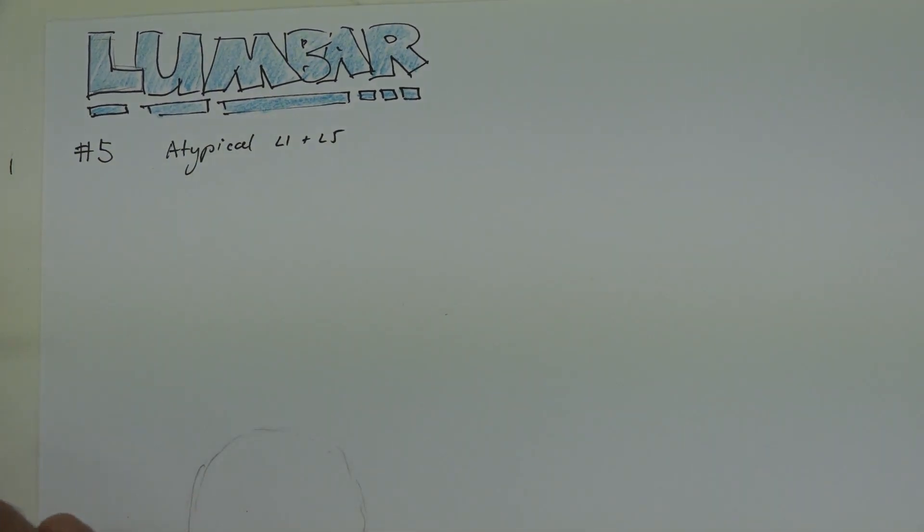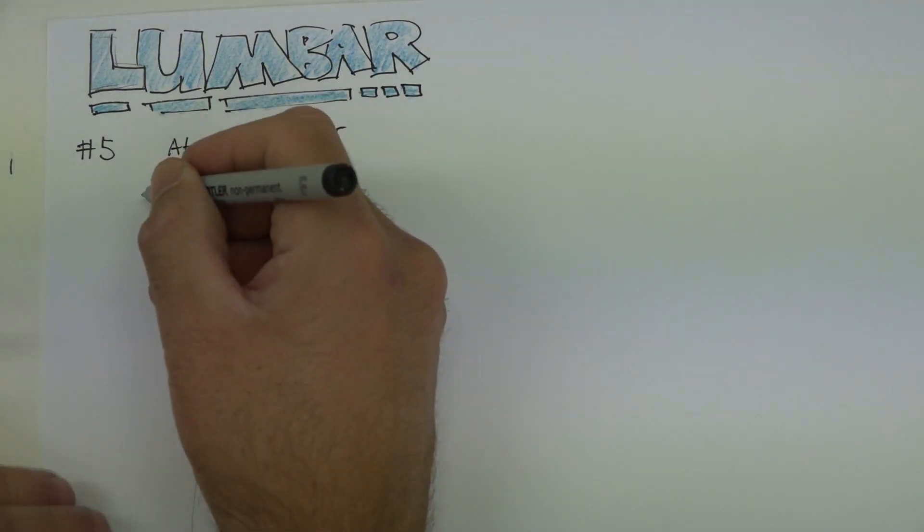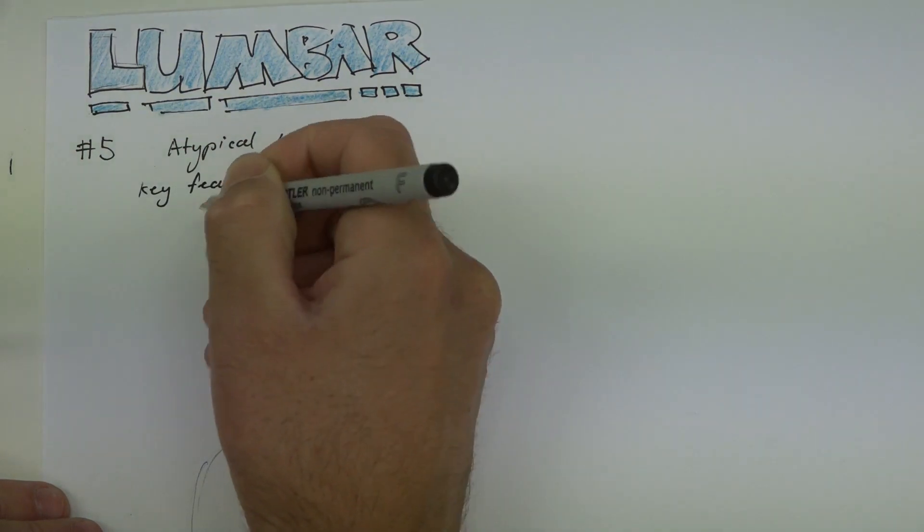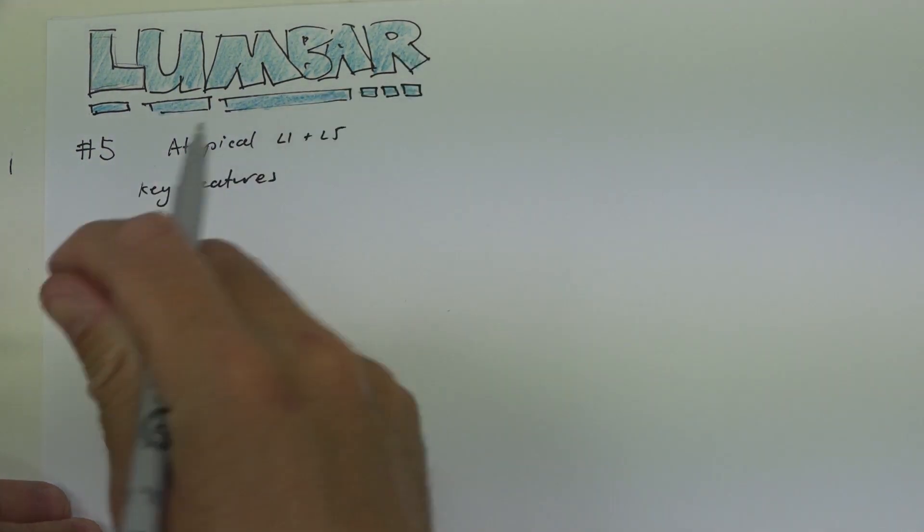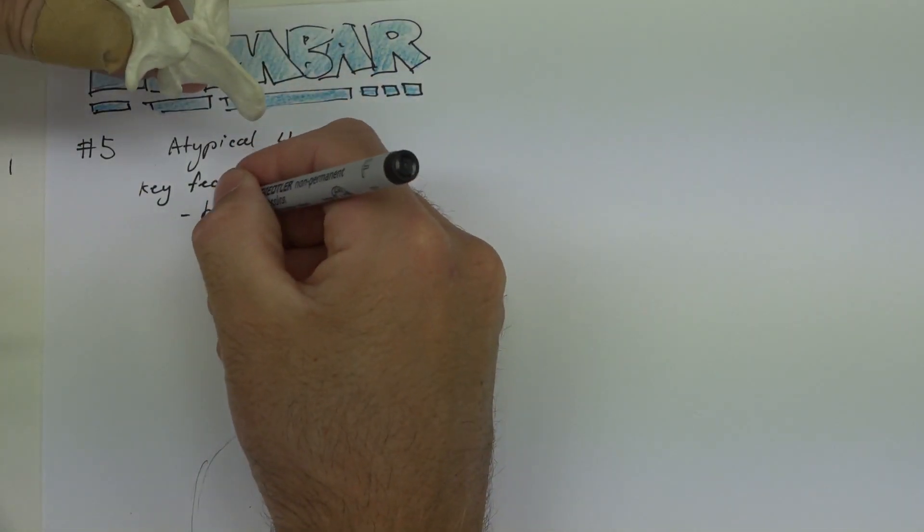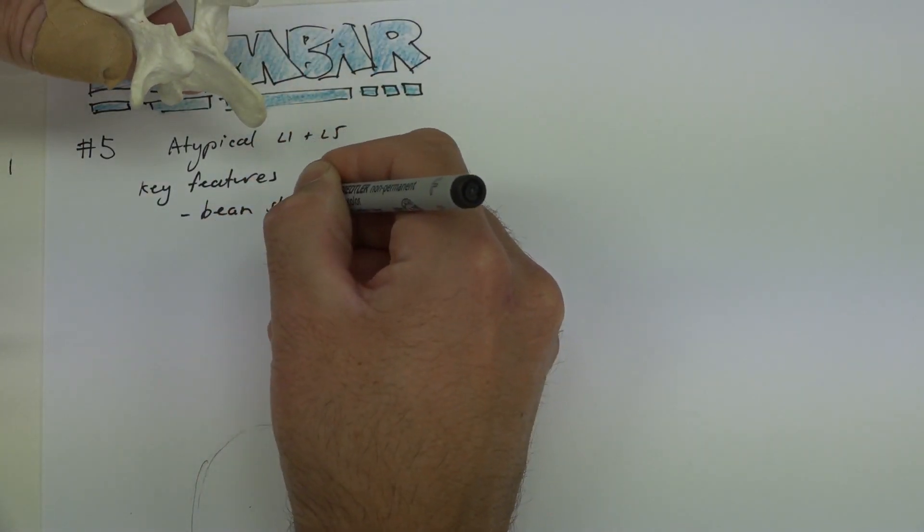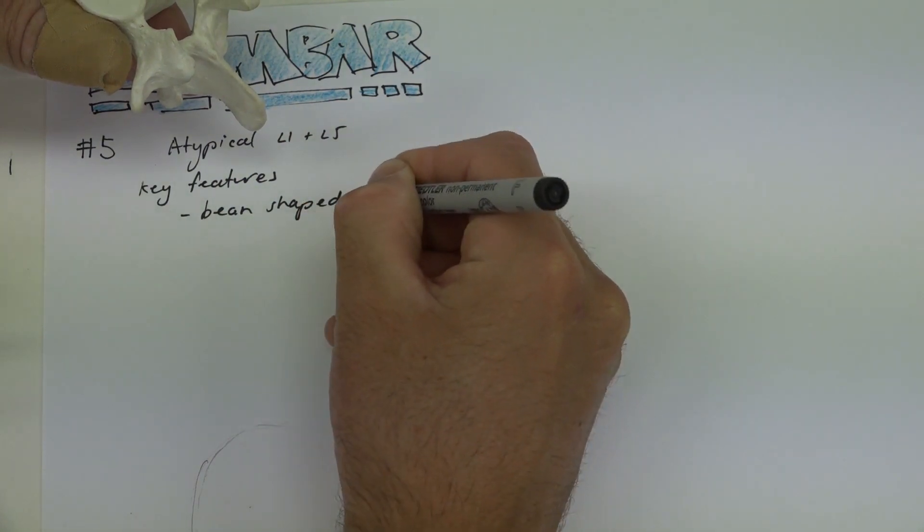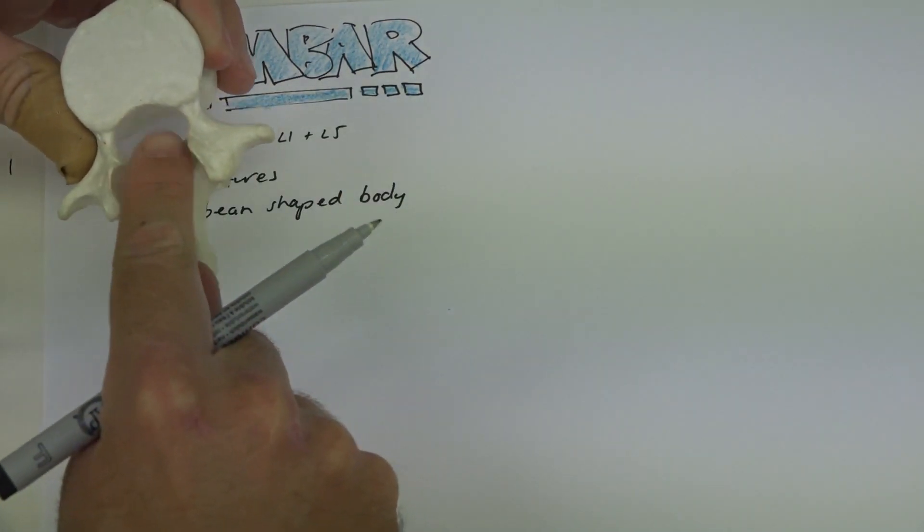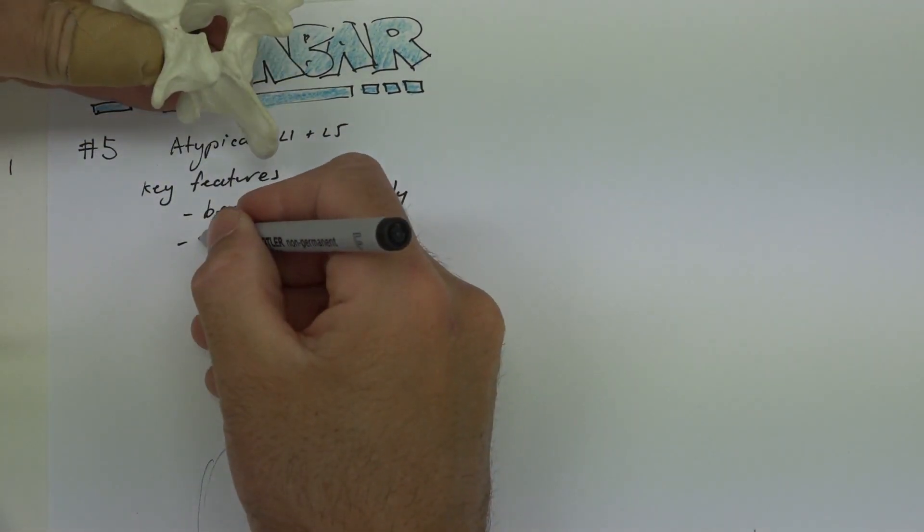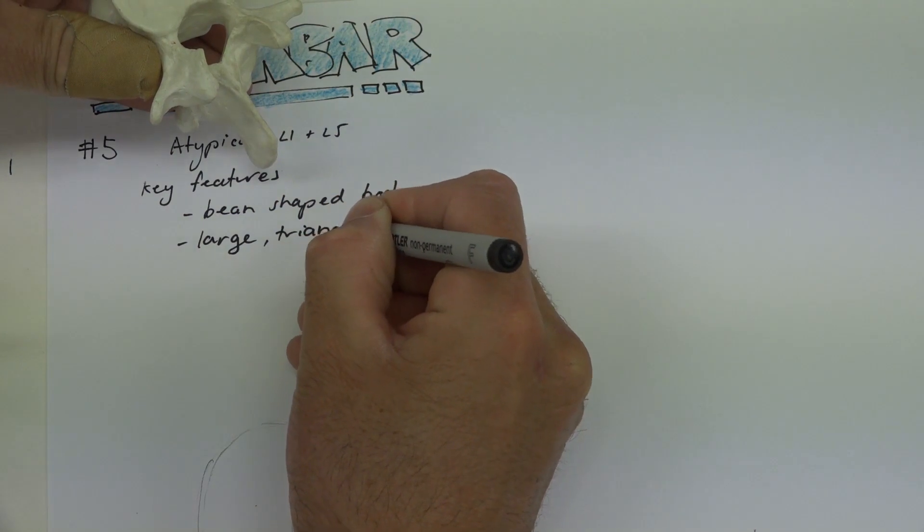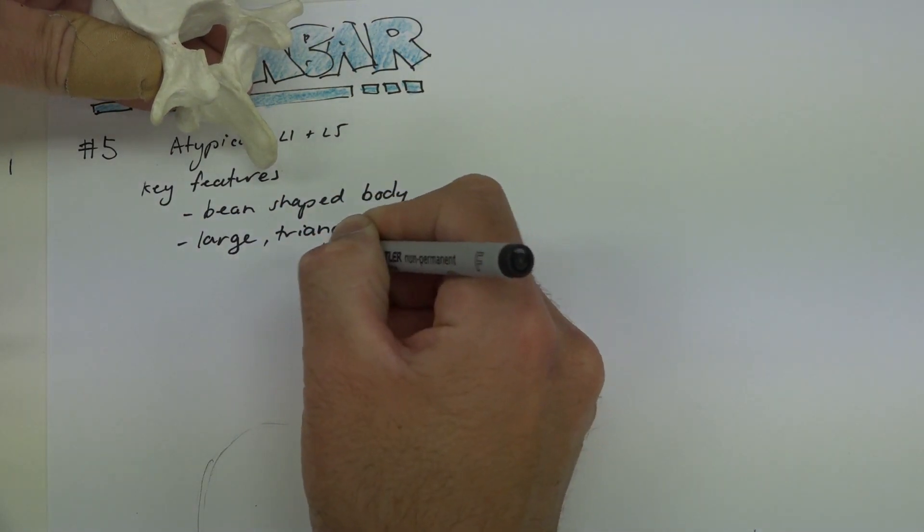Some of the key features which will help you identify lumbar vertebrae from other regions is that the body is bean-shaped or kidney-shaped, and the vertebral foramen is somewhat triangular. So large, triangular vertebral foramen.